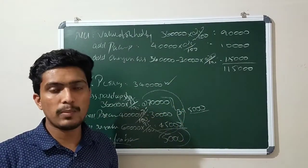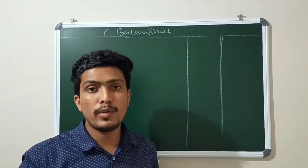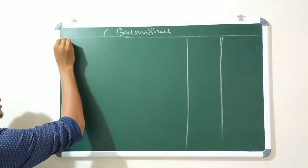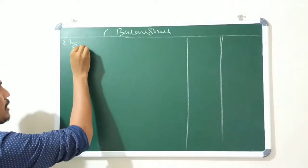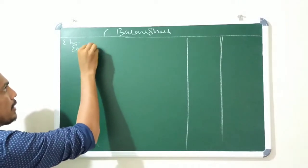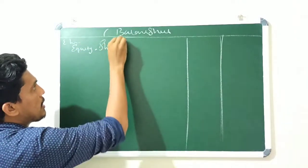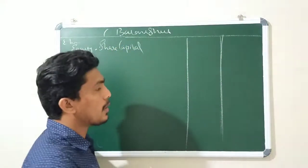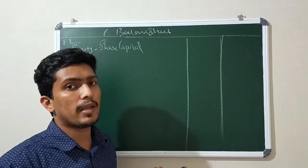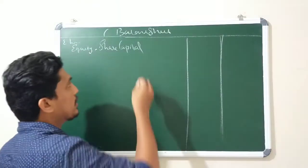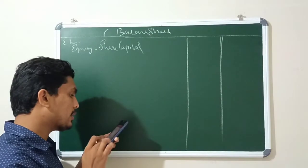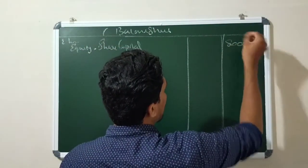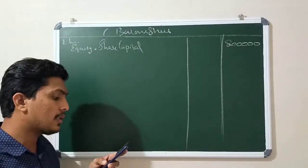We now prepare the Consolidated Balance Sheet. Under Equities and Liabilities, first is equity. Share capital — parent company only — is $8,00,000.